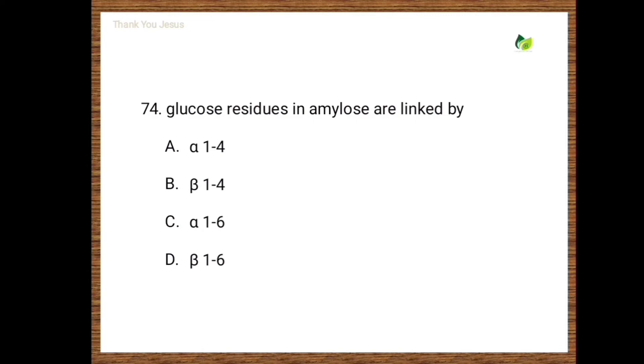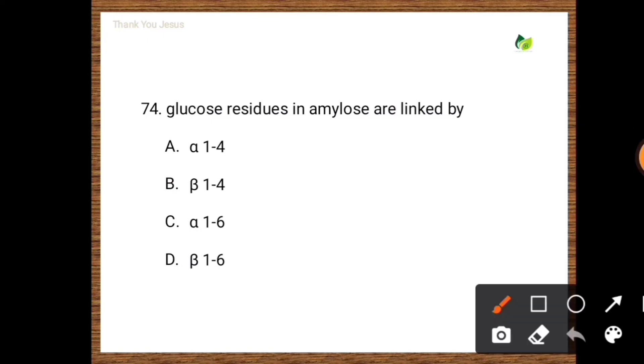Next question: Glucose residues in amylose are linked by — options are alpha-1,4; beta-1,4; alpha-1,6; beta-1,6. The correct option is alpha-1,4.